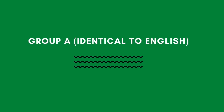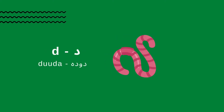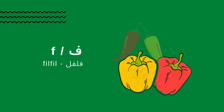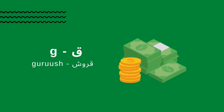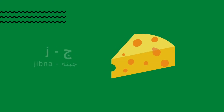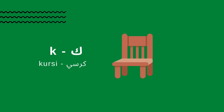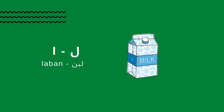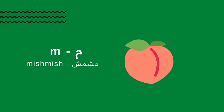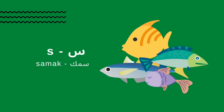Group A: identical to English. Baab, Duda, Filfil, Gurush, Hidum, Jibna, Kursi, Laban, Mishmish, Nahl, Samak.